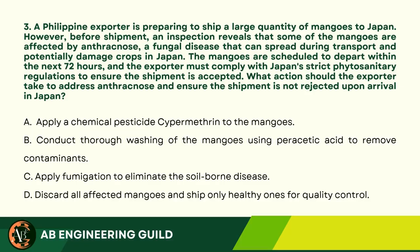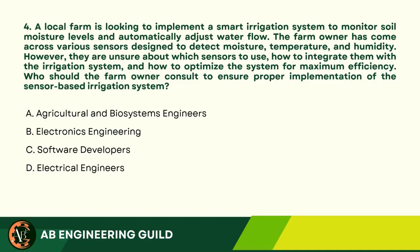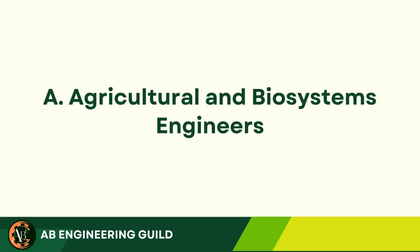Question 3. A Philippine exporter is preparing to ship mangoes to Japan, but some are found to have anthracnose. What action should be taken to meet Japan's phytosanitary regulations? A. Apply a chemical pesticide cypermethrin to the mangoes. B. Conduct thorough washing using parasitic acid. C. Apply fumigation to eliminate the soil-borne disease. D. Discard affected mangoes and ship only healthy ones. Answer: C. Apply fumigation to eliminate the soil-borne disease. Question 4. A farm wants to use sensors to automate its irrigation system. Who should they consult for proper implementation? A. Agricultural and biosystems engineers. B. Electronics engineering. C. Software developers. D. Electrical engineers. Answer: A. Agricultural and biosystems engineers.